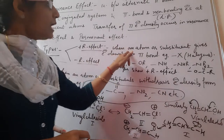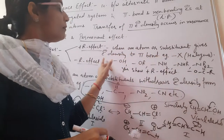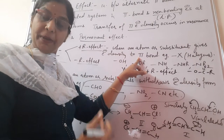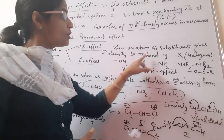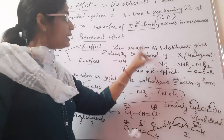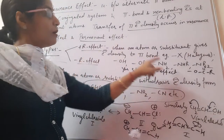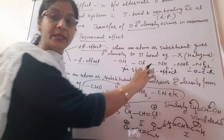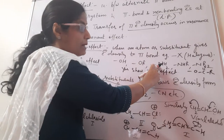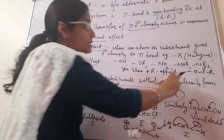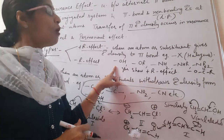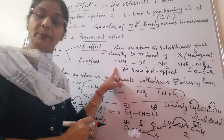Plus R effect occurs when an atom or substituent gives electron density to the pi bond — when it is present at an adjacent position to the pi bond and donates electron density to it. Examples of groups showing plus R effect include all halogens, hydroxy, alkoxy, primary amino, secondary, tertiary amino groups, as well as esters. All these groups have lone pairs of electrons which they can easily donate.